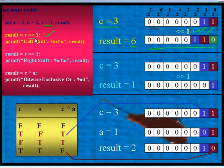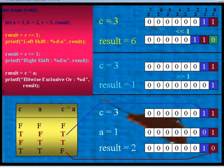This is the binary equivalent of the decimal number 6. Hence, after left shift by one bit, the variable result will contain the number 6.